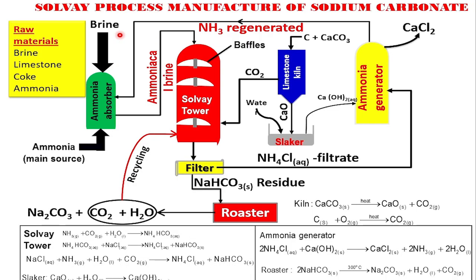Let's look at the main reactions that take place in the Solvay process. First of all, you need brine — as you can see from the screen, brine is supplied from the top — and then we have ammonia supplied from the bottom part. So when the two come together, they mix in the ammonia absorber. That's the first step. When the brine and ammonia mix, they form the ammoniacal brine, which is taken to the Solvay tower. Ammoniacal brine is simply brine which is concentrated with ammonia — it is simply a mixture of brine and ammonia.